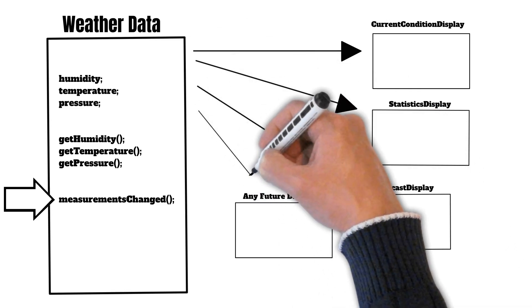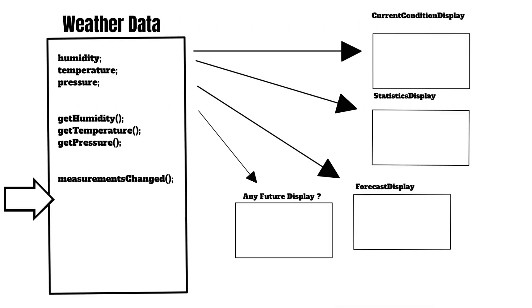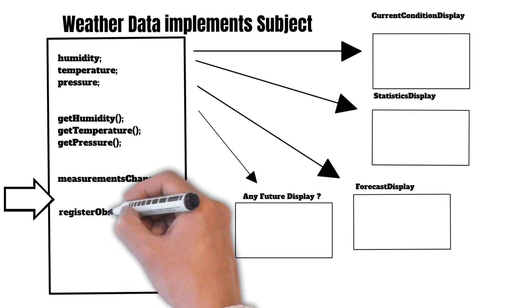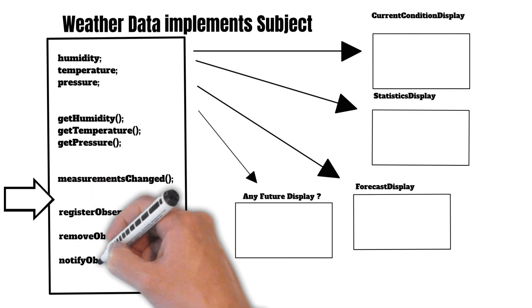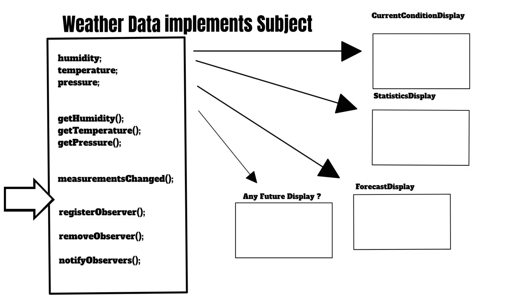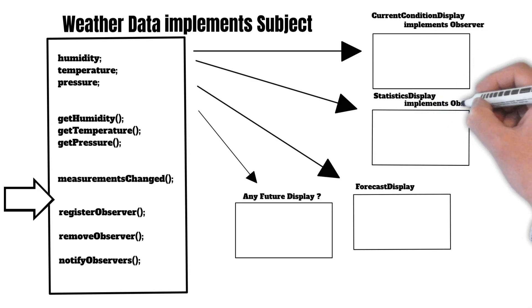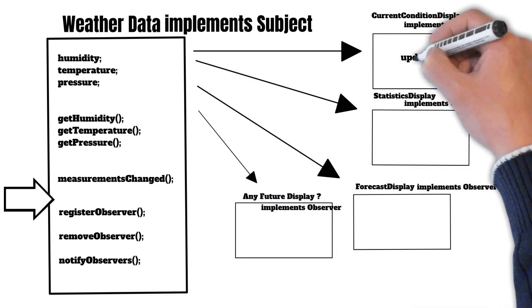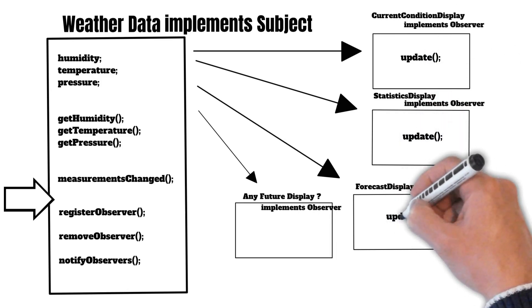In the future there may be more displays as well, so we need the flexibility of adding and removing displays on the go. To handle this, we'll make our WeatherData implement the subject interface — so it will get the methods registerObserver, removeObserver, and notifyObservers. We'll also make all our display elements implement the observer interface, so they will get the corresponding update method.